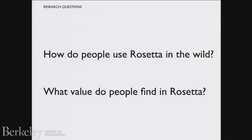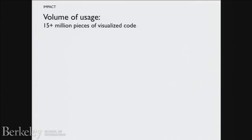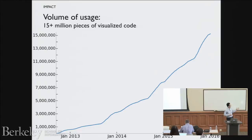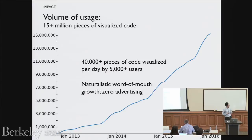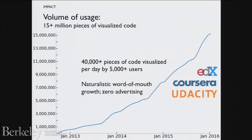Questions you might have: how do people actually use this tool in the wild, and what value do they find in it? It turns out there's been tremendous usage in the past three years since deployment. There are about 15 million pieces of code visualized so far, and every day about 40,000 pieces of code are visualized for about 5,000 users. All of this is naturalistic word-of-mouth growth — zero advertising budget. It's been driven bottom-up by students taking MOOCs, learning from Codecademy or Khan Academy, sharing it online.